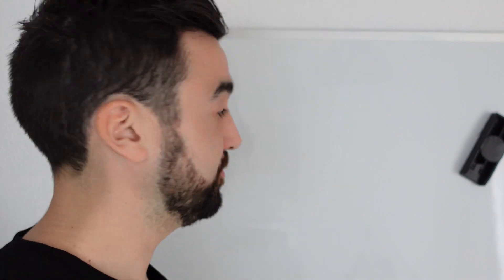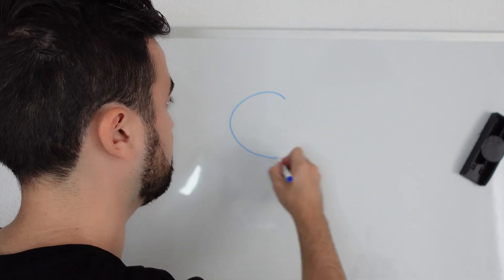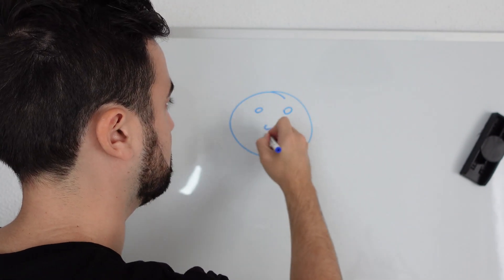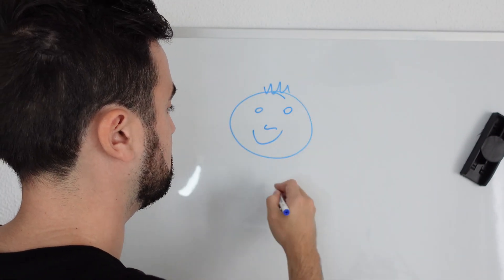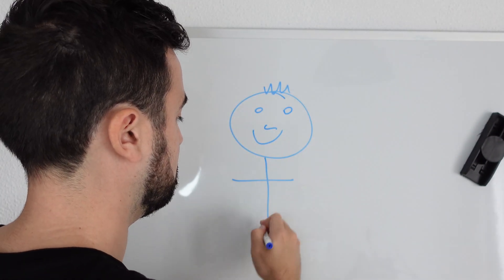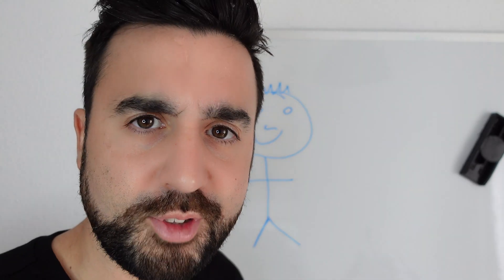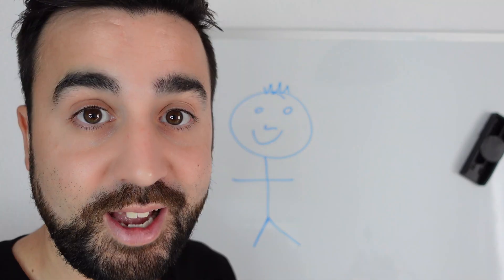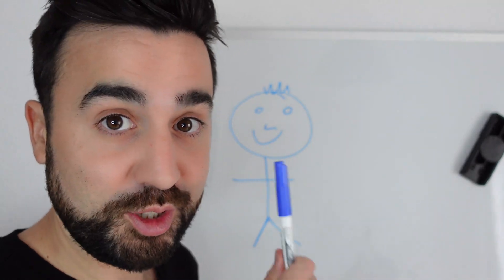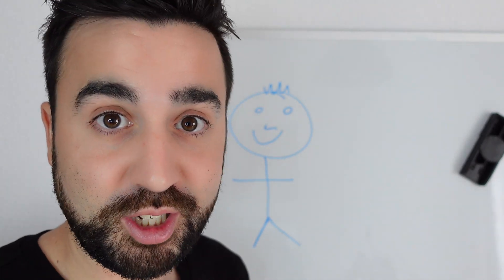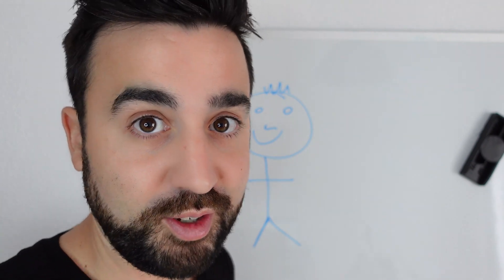I'm going to do a couple of examples right now. First we're going to need a picture, so let's draw one now. Not bad. Now I'm going to take a photo of this picture with my mobile phone.